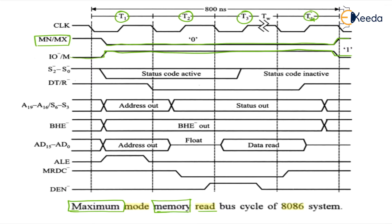When you want to send data, put the active state; when you don't want to send data, put the inactive state. Next, since this is a memory read operation, the processor is receiving data — so the receive signal R bar must be put to zero.